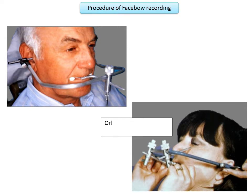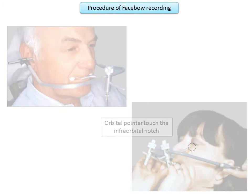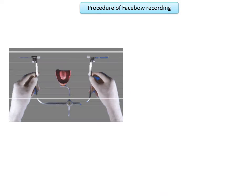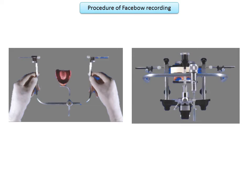If using a Hanau facebow, an orbital pointer will point to the orbitale, touching the infraorbital notch. The entire facebow assembly is then removed along with the occlusal rim from the patient's mouth and transferred to the articulator. In the final setup, the facebow holds the bite registration material on the maxillary occlusal rim, and this facebow recording is transferred to the articulator using a transfer jig.